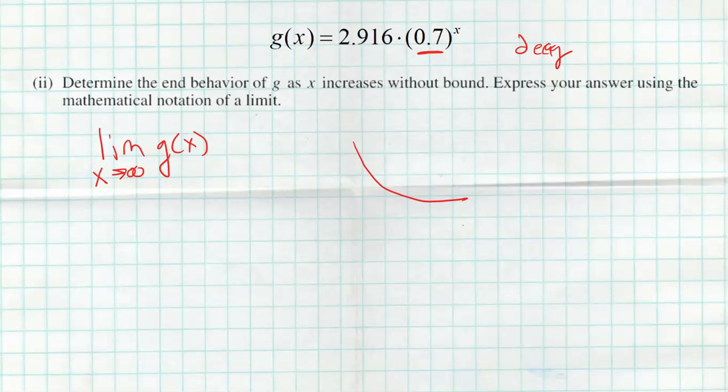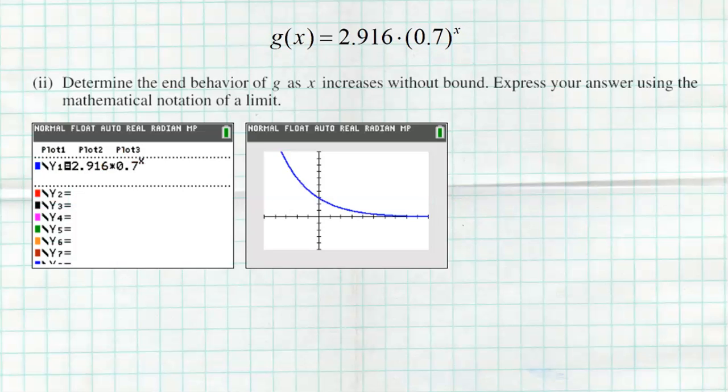If you don't remember that, you are allowed to use your calculator on this particular problem. You could go ahead into y1 and graph 2.916 times 0.7 raised to the x. Take a look at the graph. We can actually see exactly what I just drew, a function that's decaying. We have that horizontal asymptote at 0, and we're going to get closer and closer to 0 but never get there. That leads us to the limit of g of x as x increases without bound going towards infinity equaling 0. You can either make the graph or you can know what an exponential decay function looks like.